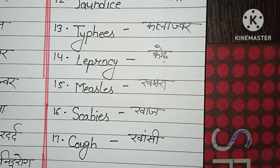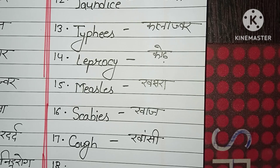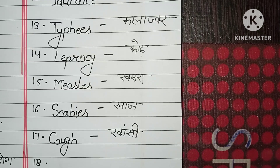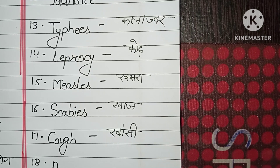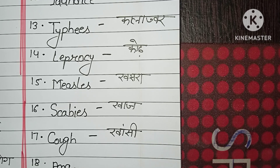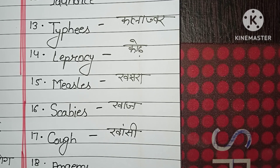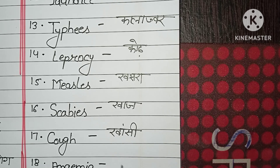Number eighteen: anemia. A-N-A-E-M-I-A. Anemia. Khun ki kumi.